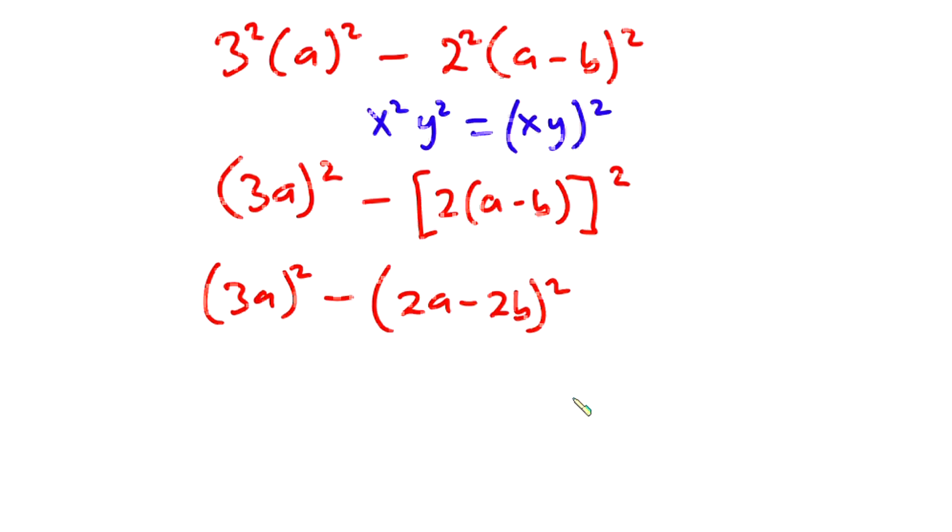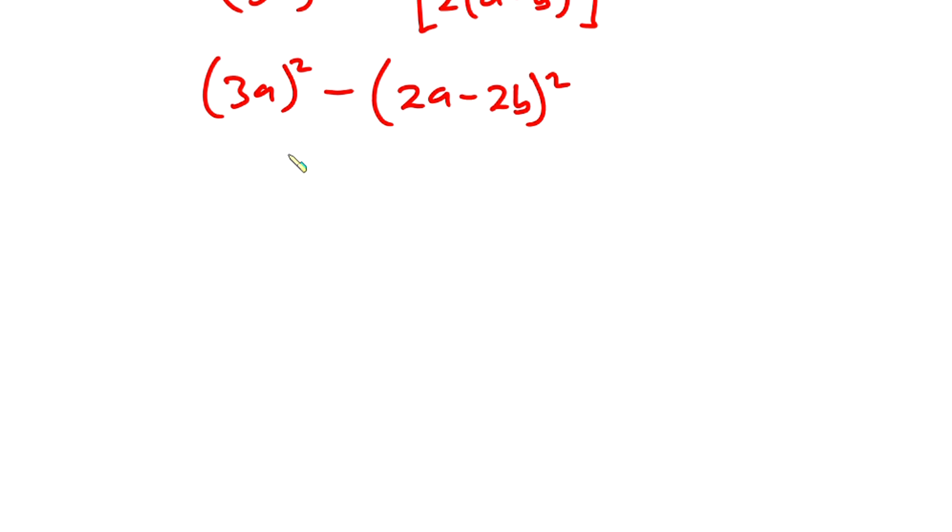Then we're going to apply the difference of squares identity: x² - y² = (x + y)(x - y).